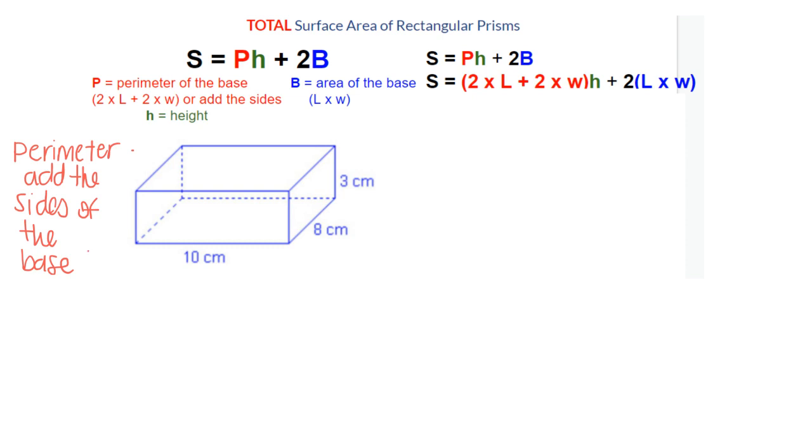One way I like to find perimeter is just to add the sides of the base. The base is this 10 by 8 rectangle. So to find perimeter, I would do 10 plus 8 plus 10 plus 8. It is the same thing as doing 2 times L plus 2 times W, but I feel like this way helps me out a little bit more understanding it. 10 plus 8 plus 10 plus 8 will actually give us 36.